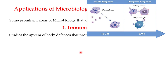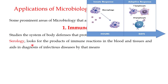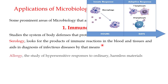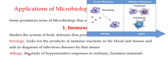One important subfield of immunology is serology. Serology looks for the products of the immune reaction in the blood and tissues, and aids in the diagnosis of infectious diseases. For example, serology looks for the number of white blood cells and certain immunological markers in your blood, which help in the diagnosis of infectious diseases.